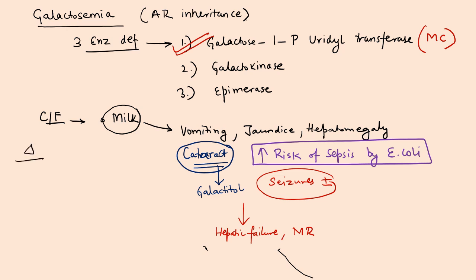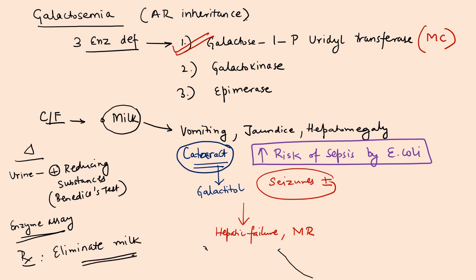How do you diagnose these children? When you take a child who is consuming milk, his urine will be positive for reducing substances, which can be checked by Benedict's test. These days you can also do enzyme assay. The only treatment here is eliminate milk and milk-based products from the diet. This is all you need to know about galactosemia.